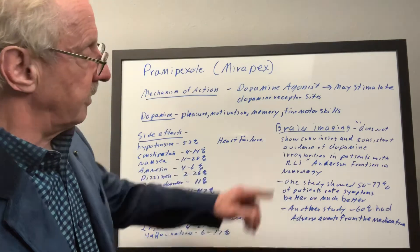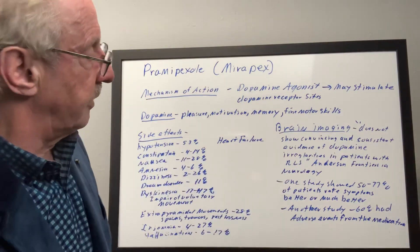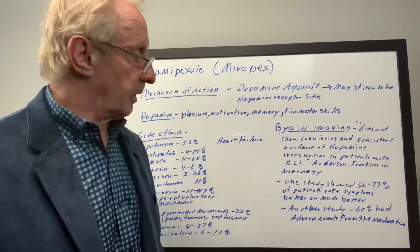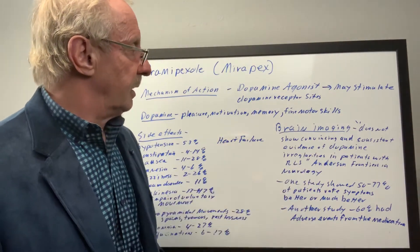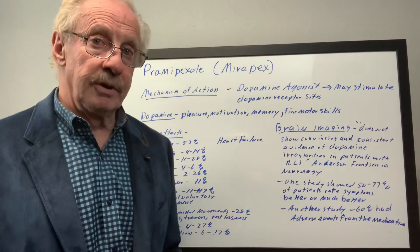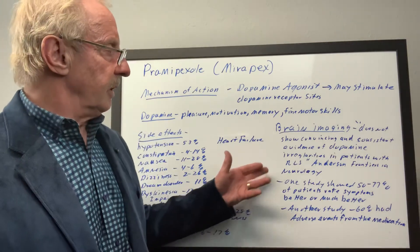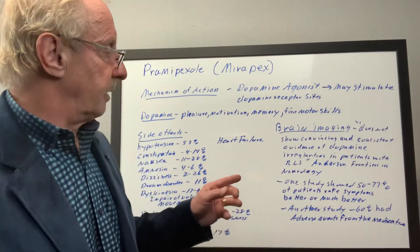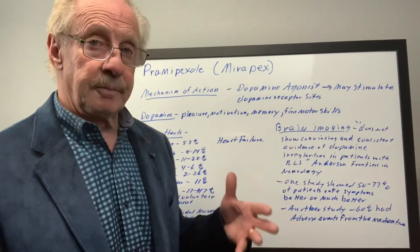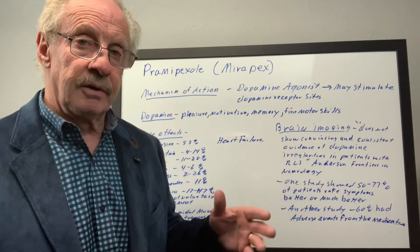And so, some of these are right straight from where it has quotations from the article, as it says down here, Anderson, Frontiers in Neurology. So, in terms of knowing really what's going on with your brain, there really isn't a lot of convincing and consistent evidence that dopamine irregularities take place in patients' brains in terms of RLS, in terms of imaging.